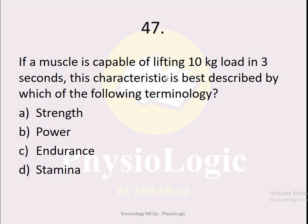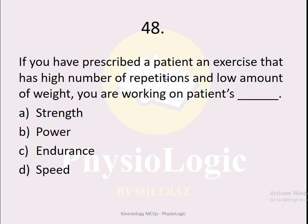MCQ number 47: If a muscle is capable of lifting a 10 kg load in three seconds, this characteristic is best described by — option A strength, option B power, option C endurance, option D stamina. The correct option is option B, power. If we only focus on the load, it would be strength; but when we include the time factor — 10 kg in three seconds — we are talking about both weight and time, which is the definition of power.